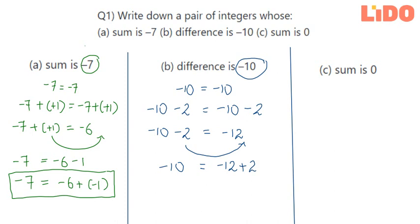I can also write this as minus 10 is equal to minus 12 minus minus of minus 2. That is my final answer. I can write minus 10 as the difference between two integers minus 12 and minus 2.